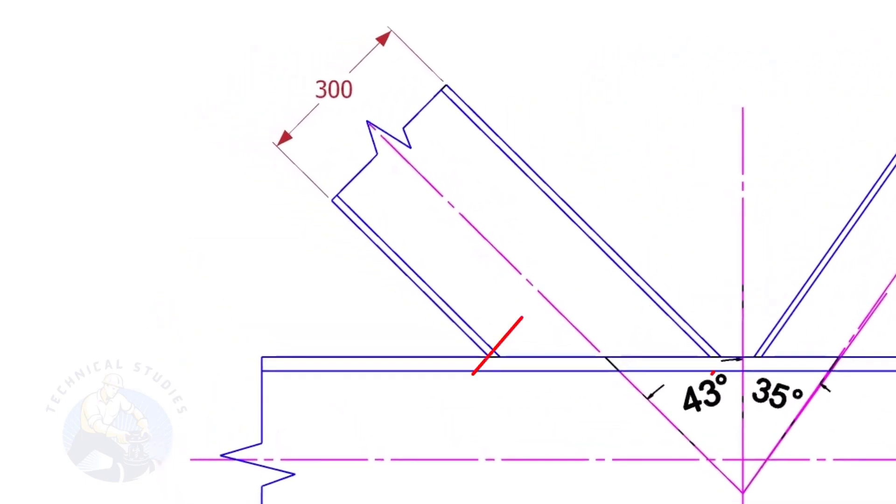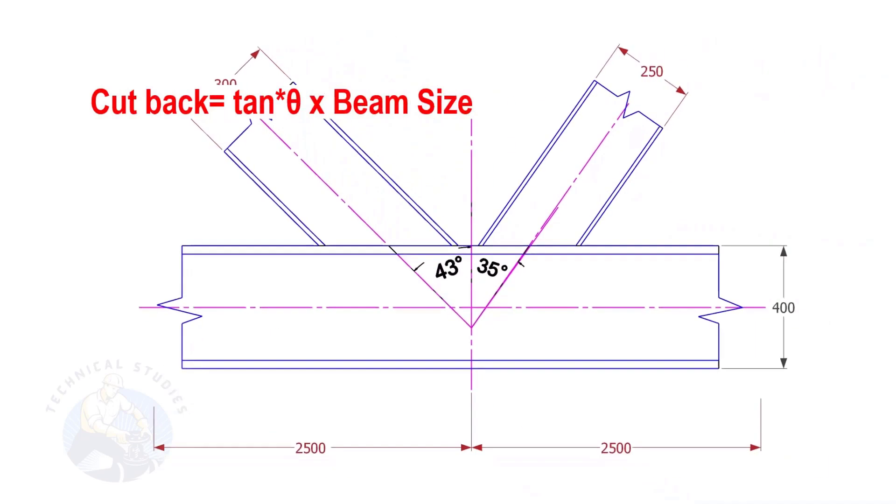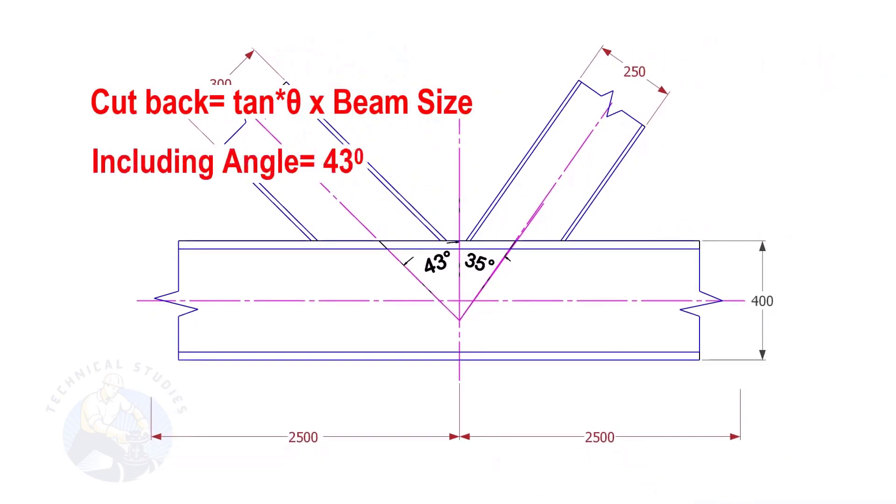Let us calculate the cutback of this beam. The formula to calculate the cutback is tan degree multiplied by the size of the beam. If the including angle is 43 degrees and the size of the beam is 300,